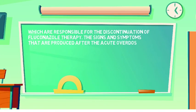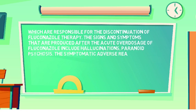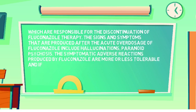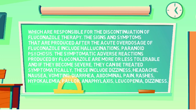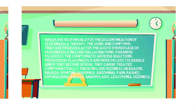The signs and symptoms produced after acute overdosage of fluconazole include hallucinations and paranoid psychosis. The symptomatic adverse reactions produced by fluconazole are more or less tolerable, and if they become severe, they can be treated symptomatically. These include dizziness, headache, nausea, vomiting, diarrhea, abdominal pain, rashes, hypokalemia, pallor, anaphylaxis, and leukopenia.